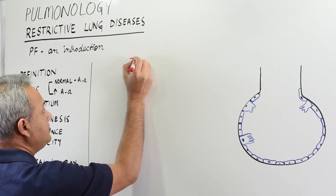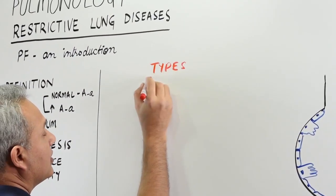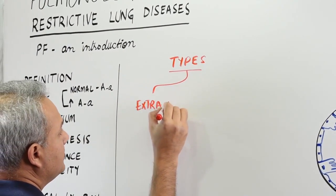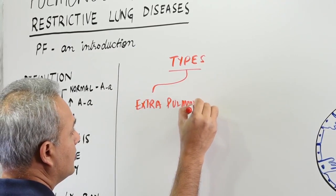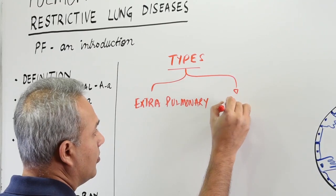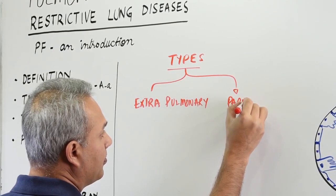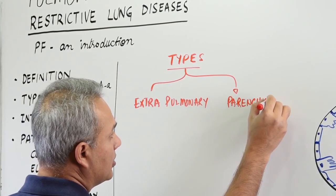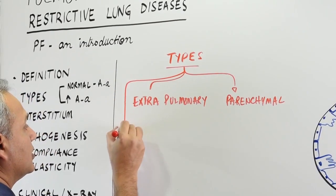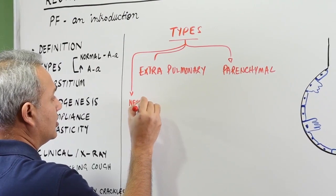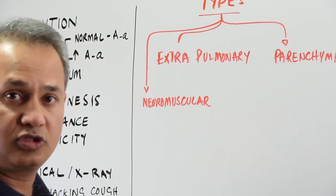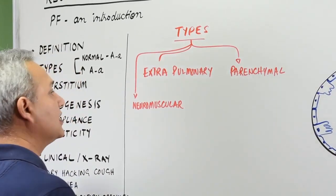So, types are extra pulmonary, pulmonary parenchymal and neuromuscular. So, three primary categories of the disease. What are these?